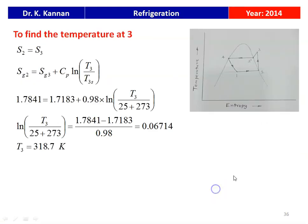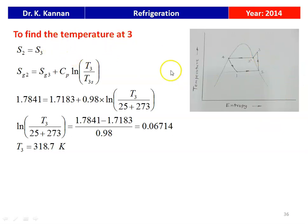We will see how. The temperature-entropy diagram for the vapor compression refrigerant cycle is shown here. Process 1 to 2 is the evaporator, 2 to 3 is the compressor process, and 3 to 4 is the condenser. The compressor inlet entropy is S2 and outlet is S3. To find temperature T3, we apply the isentropic condition S2 equal to S3, where S2 is the saturated vapor.